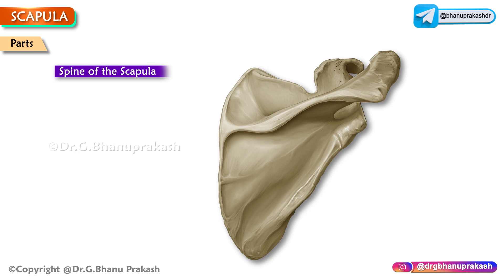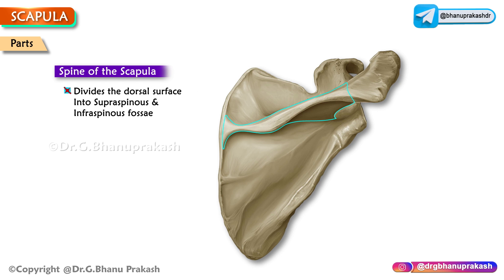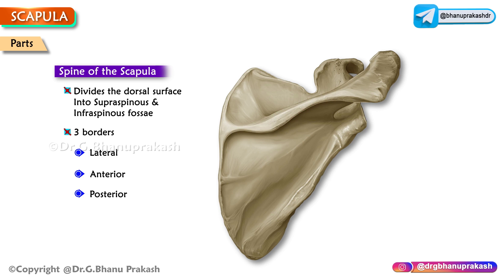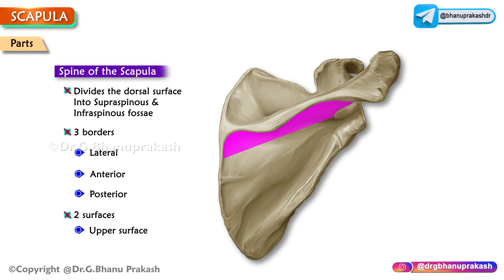The spine of the scapula is a spinous horizontal projection on the dorsal aspect of the scapula, dividing the dorsal surface into supraspinous and infraspinous fossae. It is triangular in shape and has three borders: the lateral border is free, thick and rounded; the anterior border is fused with the dorsal surface; and the posterior border has an upper and a lower lip. The spine has two surfaces — the upper surface helps form the supraspinous fossa, and the lower surface helps form the infraspinous fossa.